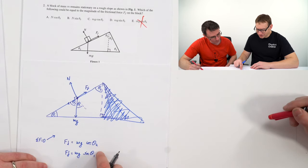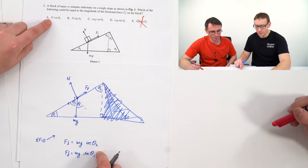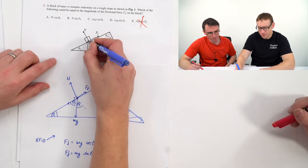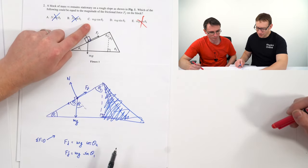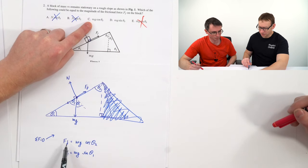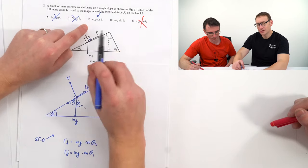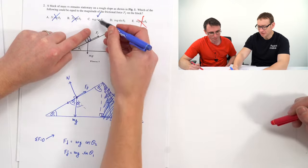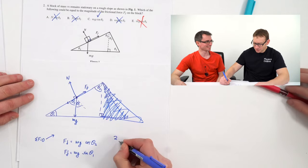Absolutely spot on — both of those are correct. Anything with a component of the normal contact force can't be related to the frictional force because they're at 90 degrees. mg cos theta 2 is correct; mg sin theta 2 cannot also be correct — it can't be both sin and cos theta 2. So the answer is 2C. For an Olympiad question, that's a nice warm-up — anybody doing A-level or IB physics should be able to handle forces in equilibrium, resolving perpendicular to a slope, and identifying angles.